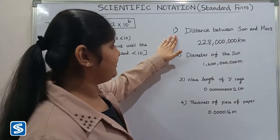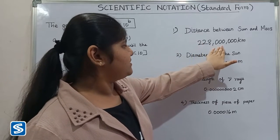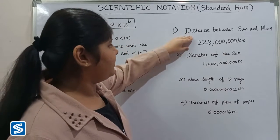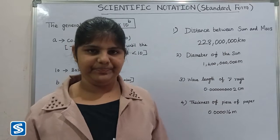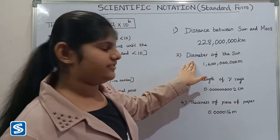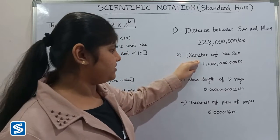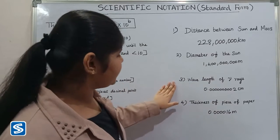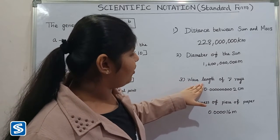Why do we write numbers in scientific notation? For example, the distance between the Sun and Mars is 228,000,000 kilometers. This number is very difficult to read and write because it is a large number. Similarly, the diameter of the Sun is also a large number and very difficult to read and write.